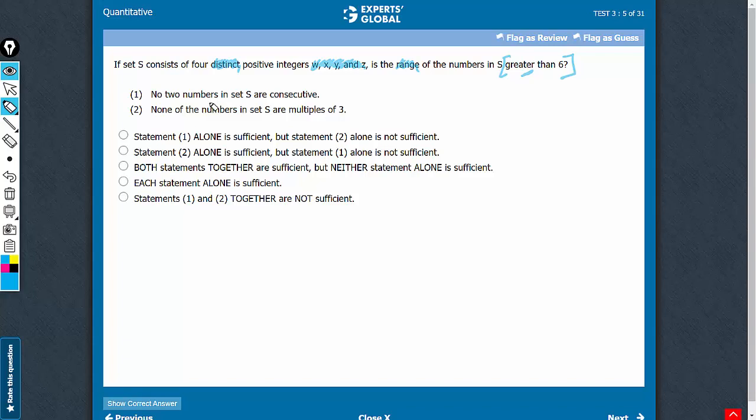Look at statement 1. It says that no two integers are consecutive, and therefore we cannot take cases such as 1, 2, 3, 4. No two integers can be consecutive. So let us take a difference of 2. A difference of 1 cannot be taken, so we take the next minimum difference, a difference of 2, and therefore we can take something like 1, 3, 5, 7, and in such a case we get no as an answer. The range is equal to 6, not greater than 6.